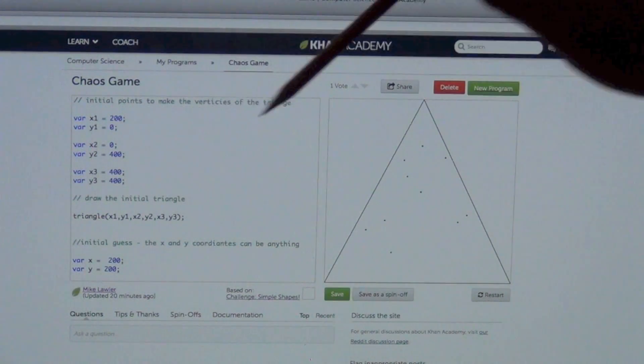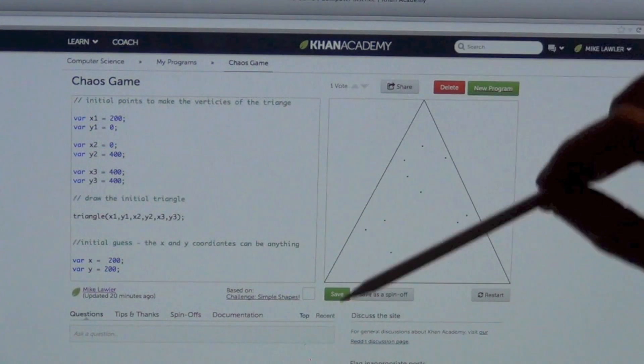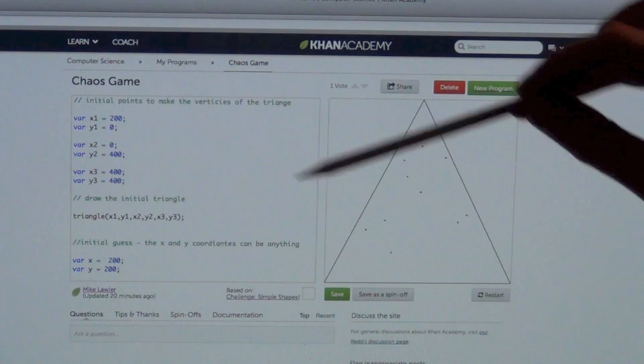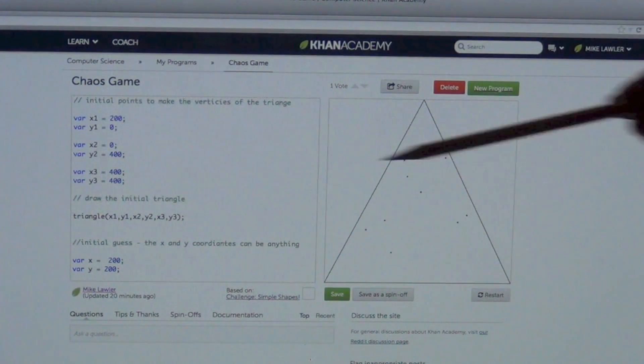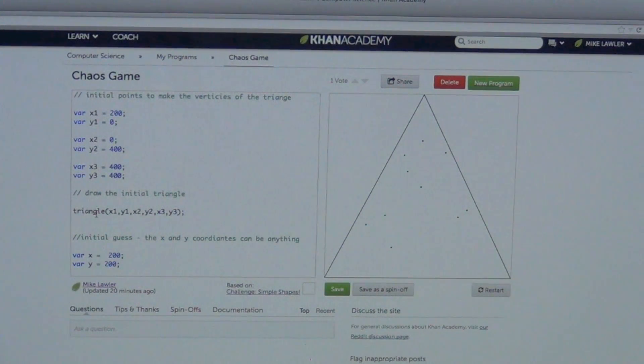The next one says x equals 0, so how far do I go over in the x direction? You don't go. Okay, and then down to 400. So down to 400. So that's here. And then the last one's 400, 400. But we can make any triangle we want. We just pick the x and y coordinates. Then I draw the triangle.